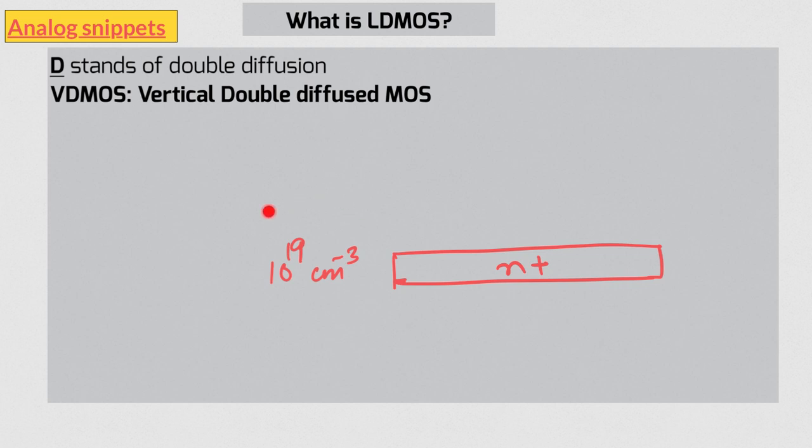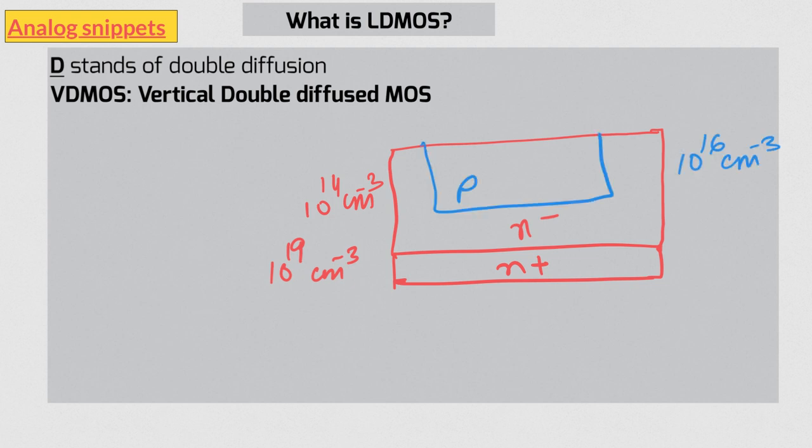A vertical DMOS starts with an N plus doped silicon. It is a highly doped and low resistivity layer. A lightly doped N minus layer is grown over this layer. Then follows the double diffusion: first a relatively lightly doped P region, and then a highly doped N plus region.